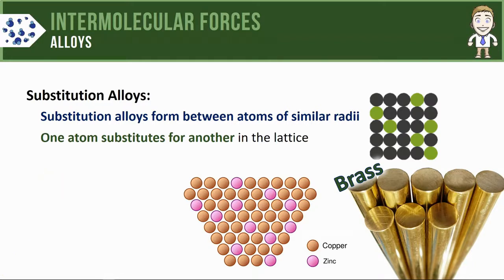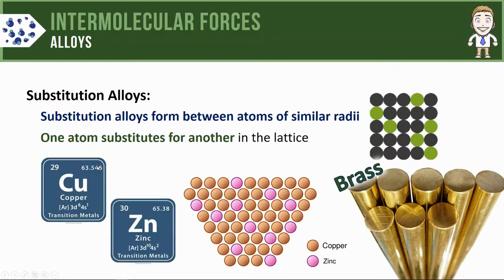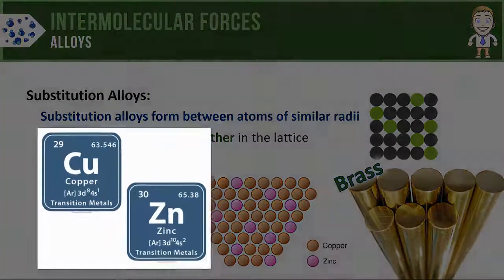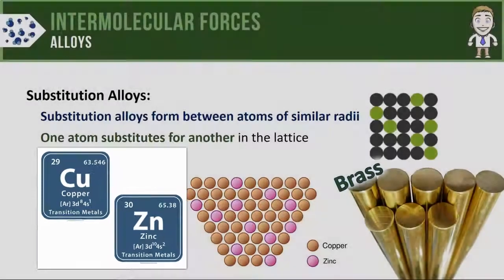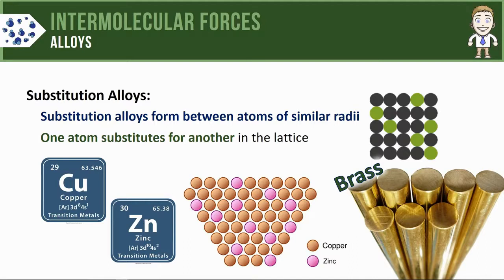You could predict that copper and zinc would form a substitution alloy as opposed to an interstitial alloy by comparing their sizes. Here's the periodic table symbols for copper and zinc. These would also allow me to write electron configurations for these two atoms. If you did that, you'd see that both copper and zinc have electrons that go to the fourth energy level. That means their sizes are going to be relatively similar, which is what tells me they form a substitution alloy rather than an interstitial.